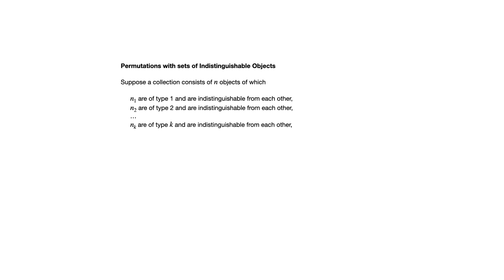Here's the formula. So if you have N objects to start with, and N sub 1 are of the first type and N sub 2 are of the second type and N sub K are of the K-th type, and N is the sum of all those N sub 1 through N sub K, then the number of distinguishable permutations of the N objects is N factorial over N sub 1 factorial times N sub 2 factorial all the way to N sub K factorial.